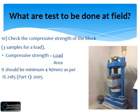Finally, we have to check the compressive strength of the block using a CTM machine. Compressive strength equals load divided by area. It should be a minimum of 4 N/mm² as per IS 2185 Part 1 2005.